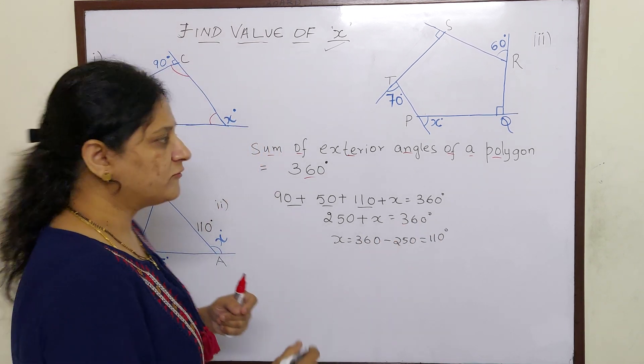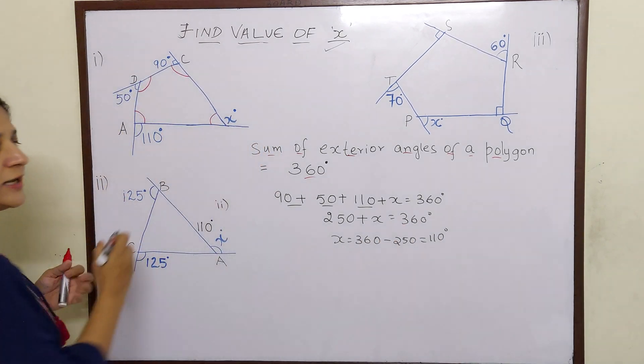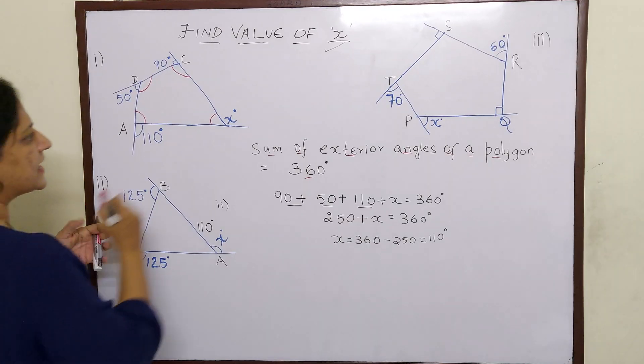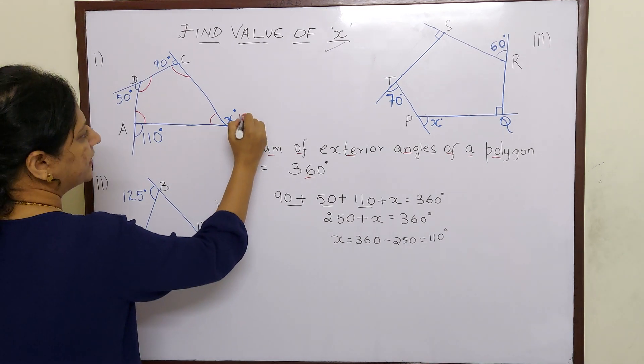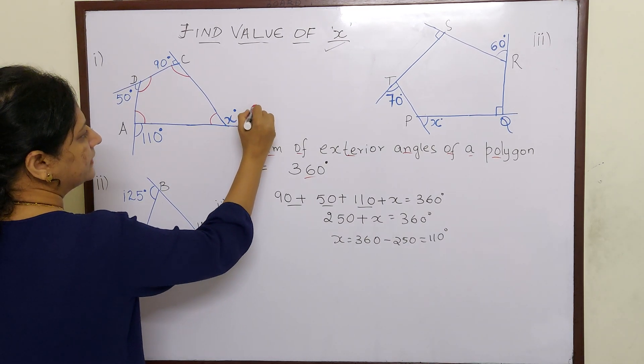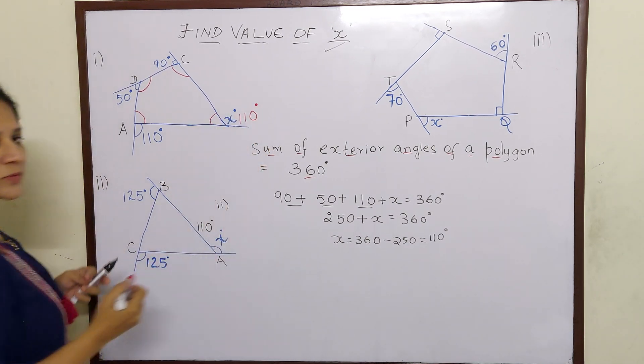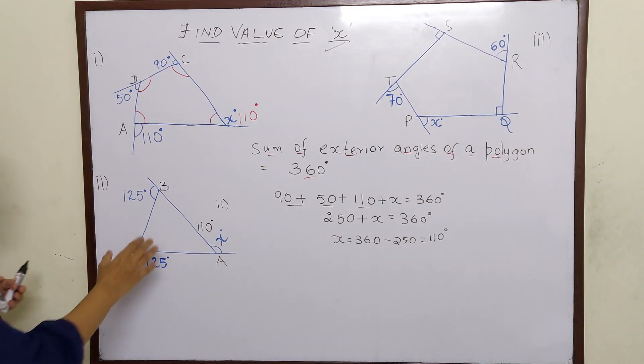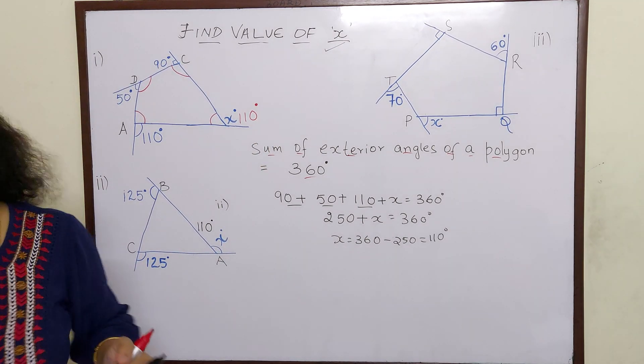So we have got the value of x as 110 degrees. Let us go to the next sum.